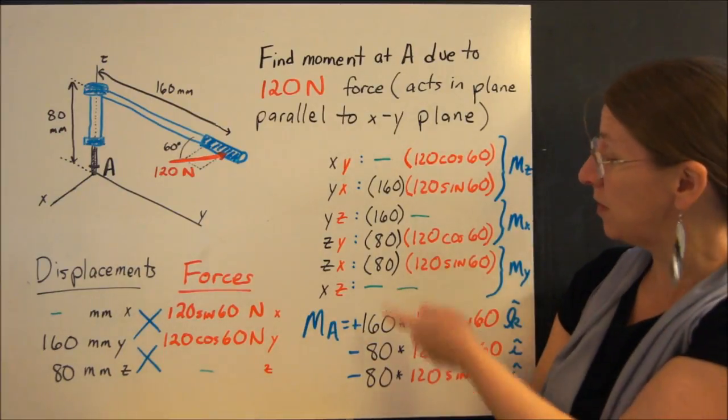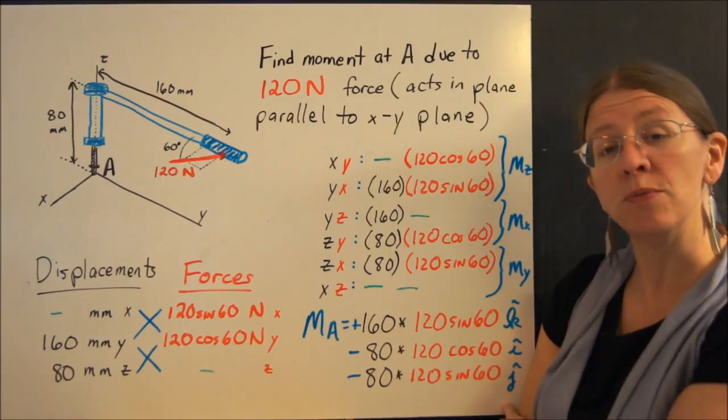So all you have to do is multiply these couple things out and figure out what the signs should be, i, j, and k.